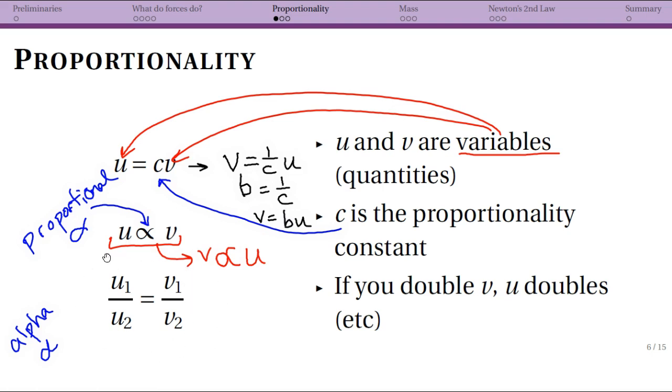And we can create this ratio relationship. And where this is coming from is that I can say, again based on this initial one, that c is equal to u over v.